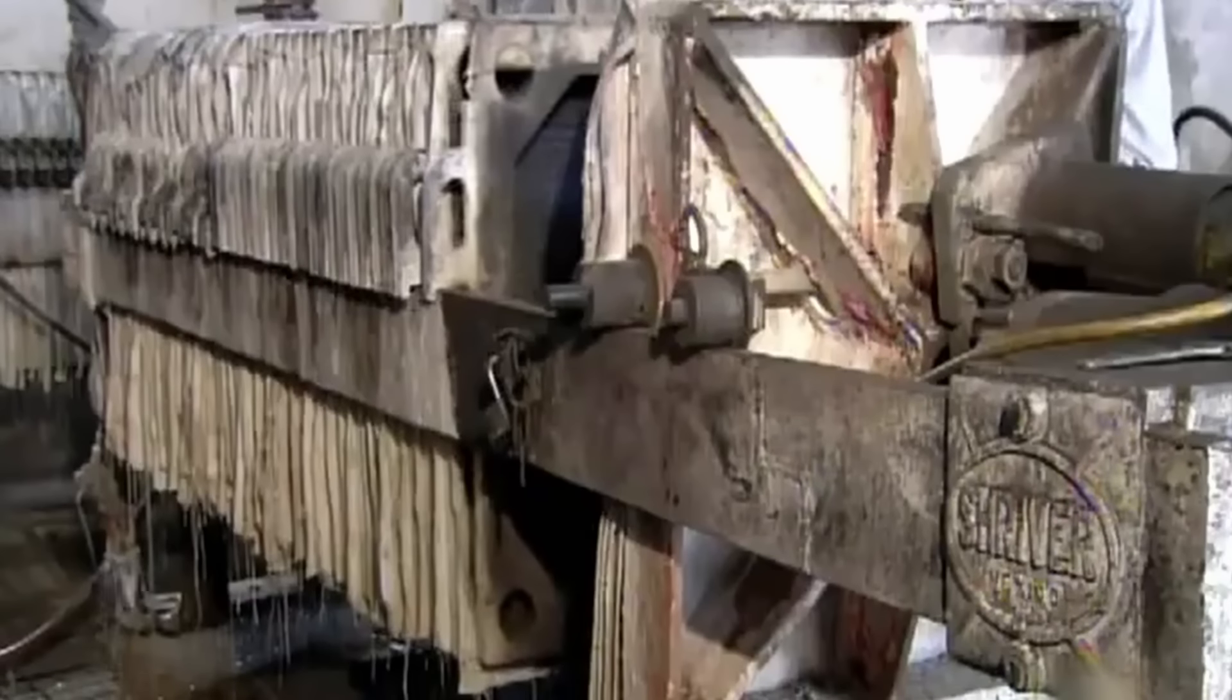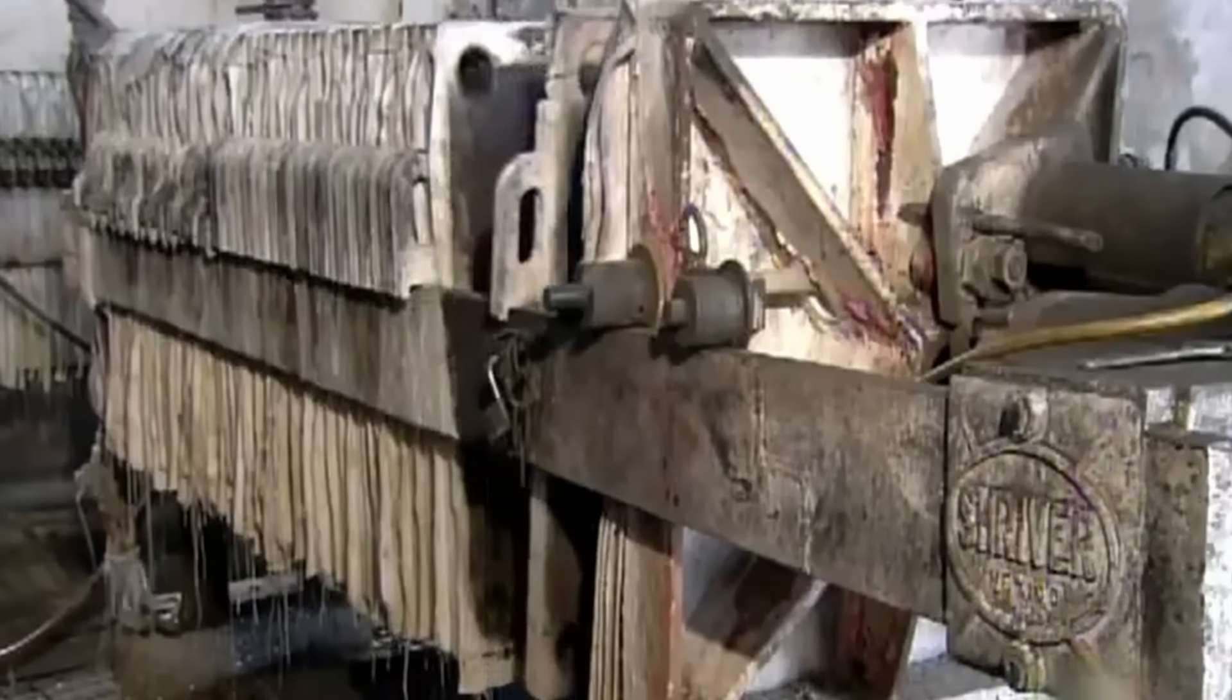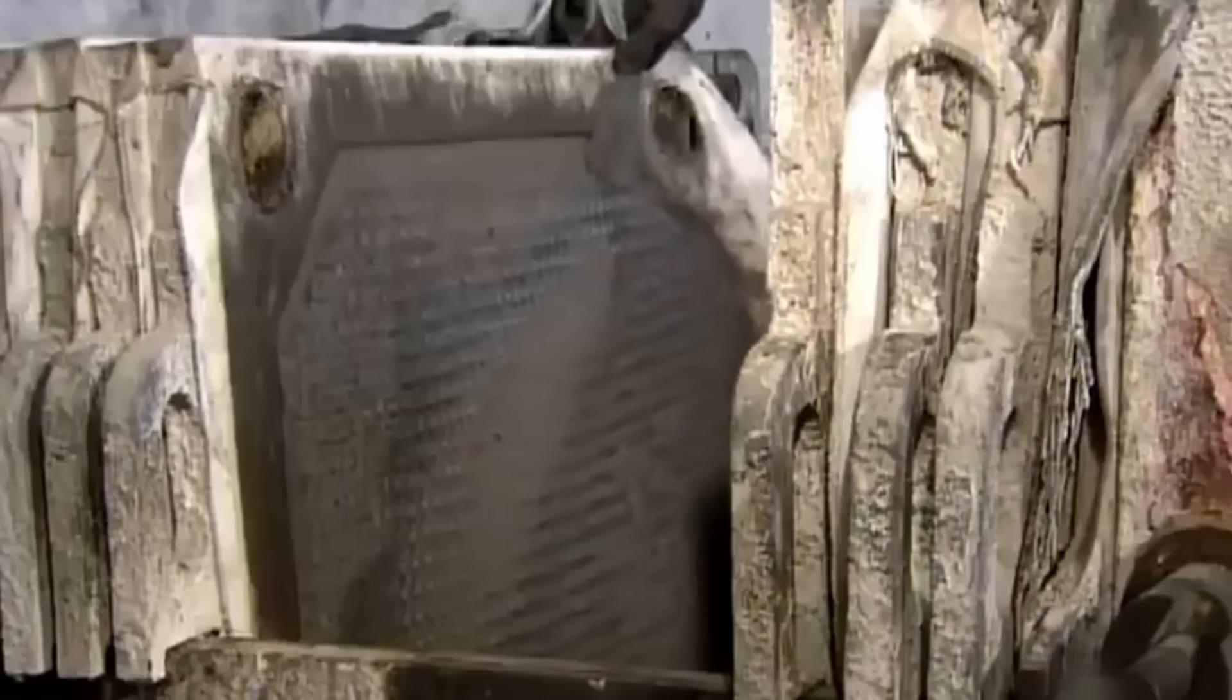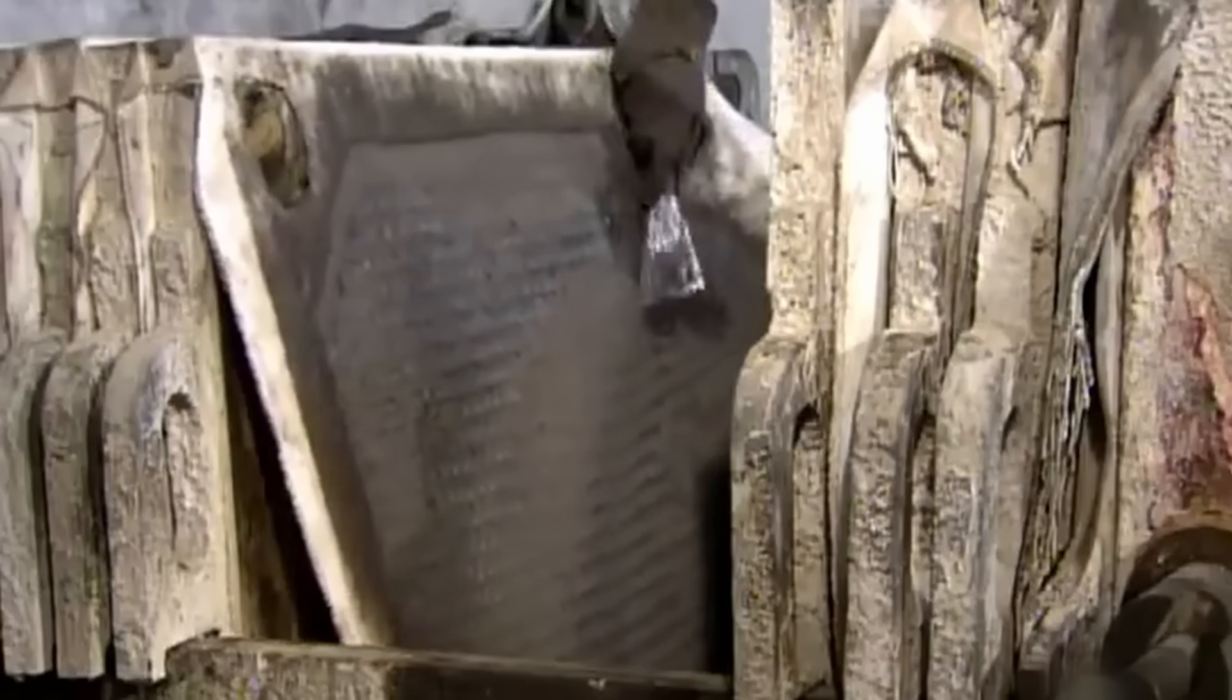As the planchets continue their journey through the mint, a unique process called edge lettering takes place. This technique involves adding inscriptions or patterns to the outer edge of the coin. It enhances the visual appeal, provides valuable information, and acts as a security feature.